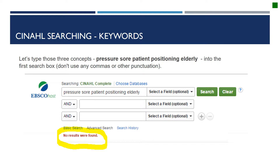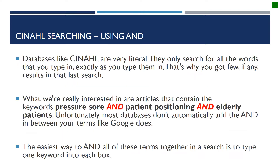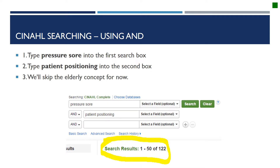Now let's try typing in those three concepts — pressure sore, patient positioning, and elderly — into the first search box. Do not use any commas or other punctuation. We get no results. Databases like CINAHL only search for all of the words exactly as you type them. The easiest way to combine terms is to type one keyword into each box. Type pressure sore into the first search box and patient positioning into the second — skipping elderly for now. We got 122 results.